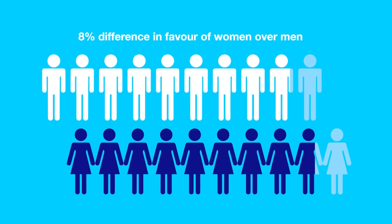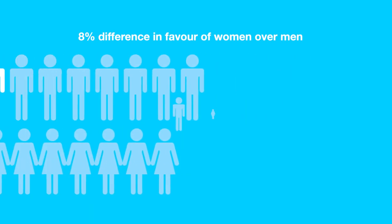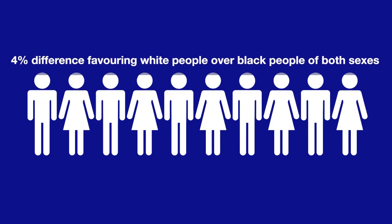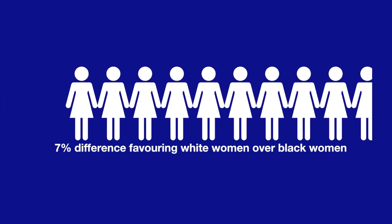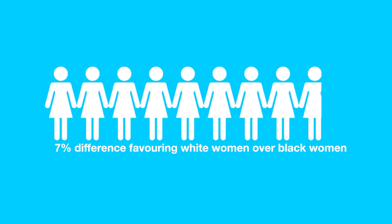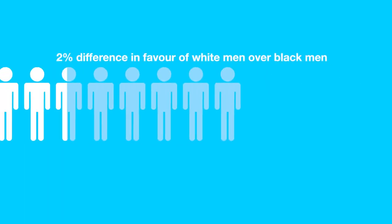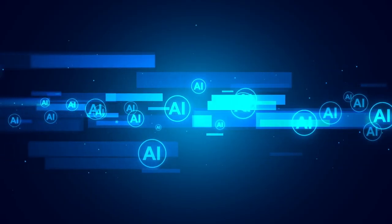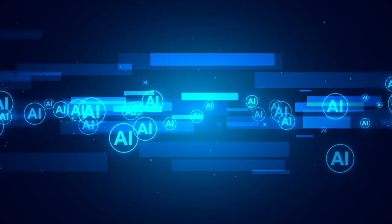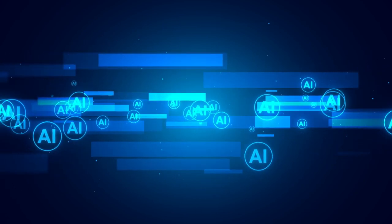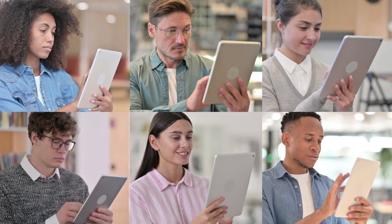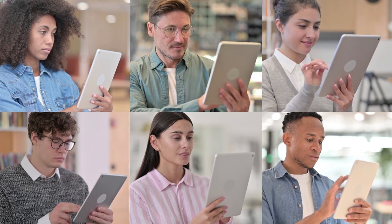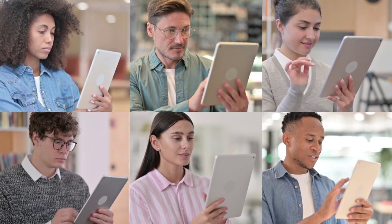Upon investigation, Twitter discovered that their algorithm had an 8% difference in favour of women over men, a 4% difference favouring white people over black people of both sexes, a 7% difference favouring white women over black women, and a 2% difference in favour of white men over black men. While these numbers don't sound large, Twitter still faced a lot of backlash, and as a result decided to remove the algorithm and replace it with a tool that allows users to preview and customise crops prior to publication.